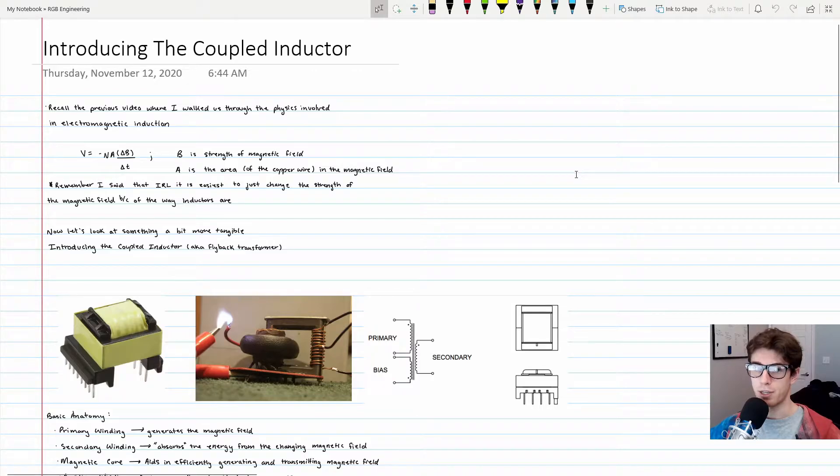A quick summary of the key concept from that video: the induced voltage in a wire is proportional to the change in magnetic field strength. In the real world, engineers manipulate this equation by focusing on changing B, the strength of the magnetic field, because for practicality and manufacturing purposes it's easiest to manipulate the B variable.